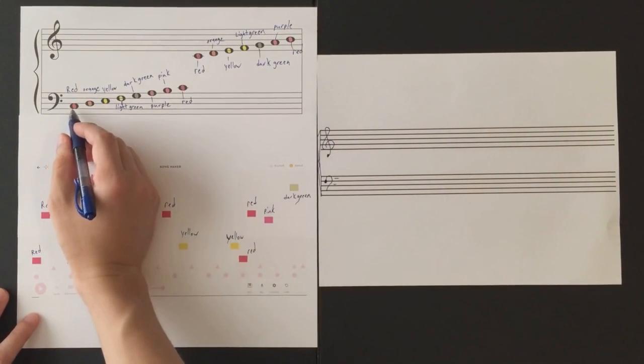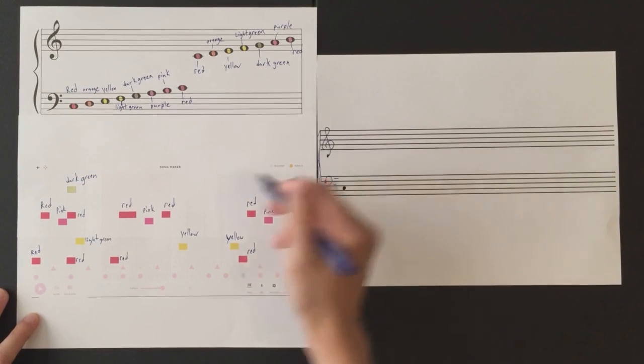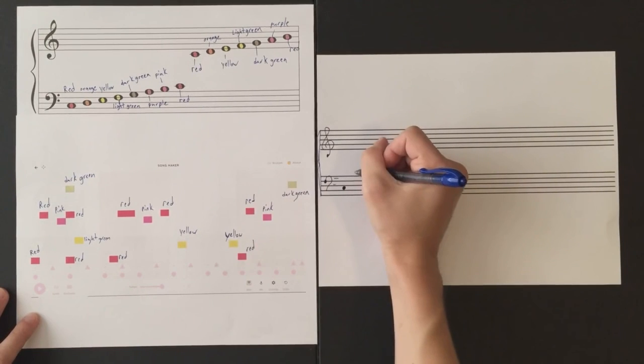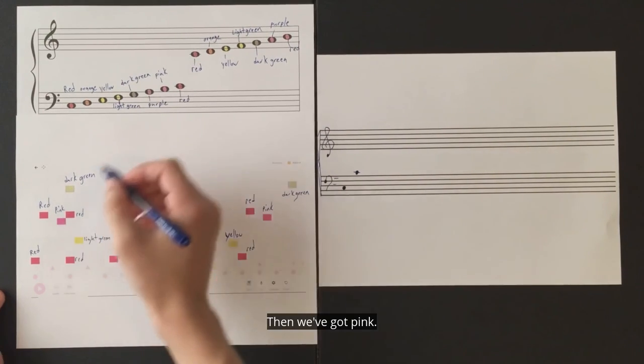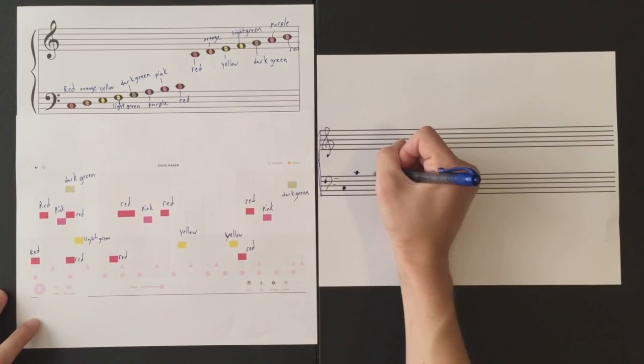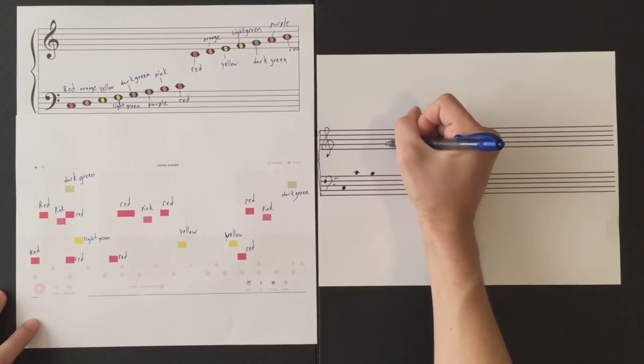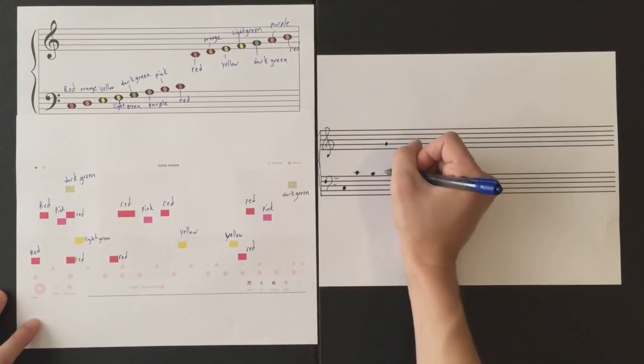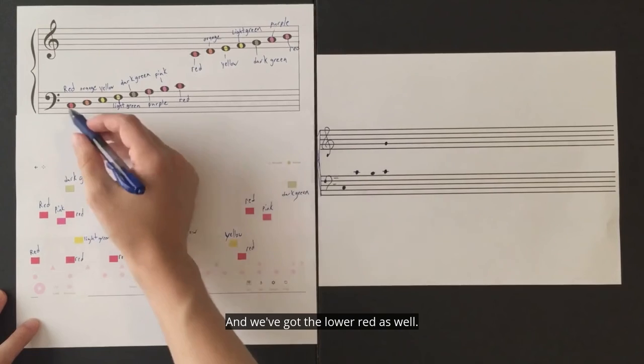So we've got red, which corresponds with the second space. We've got the higher red, so it could either be treble clef or bass clef. I'm going to do bass clef since we're kind of in that territory anyway. Then we've got pink. Then we've got dark green, which will be in the treble clef. And we've got red, and then we've got the lower red as well.